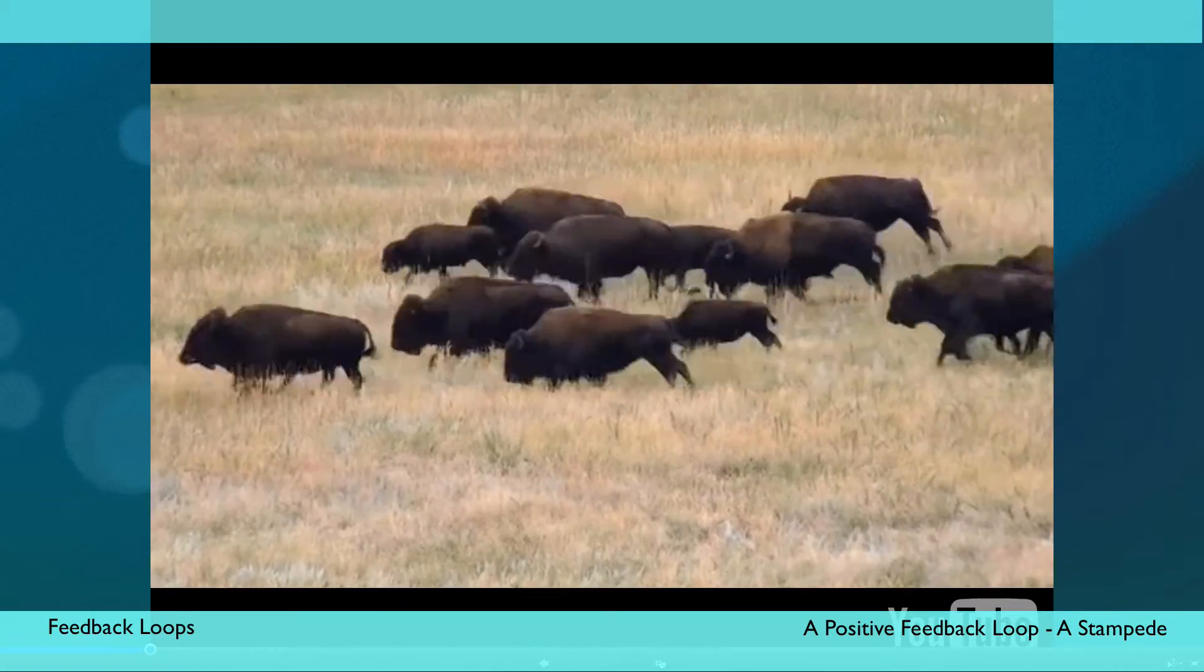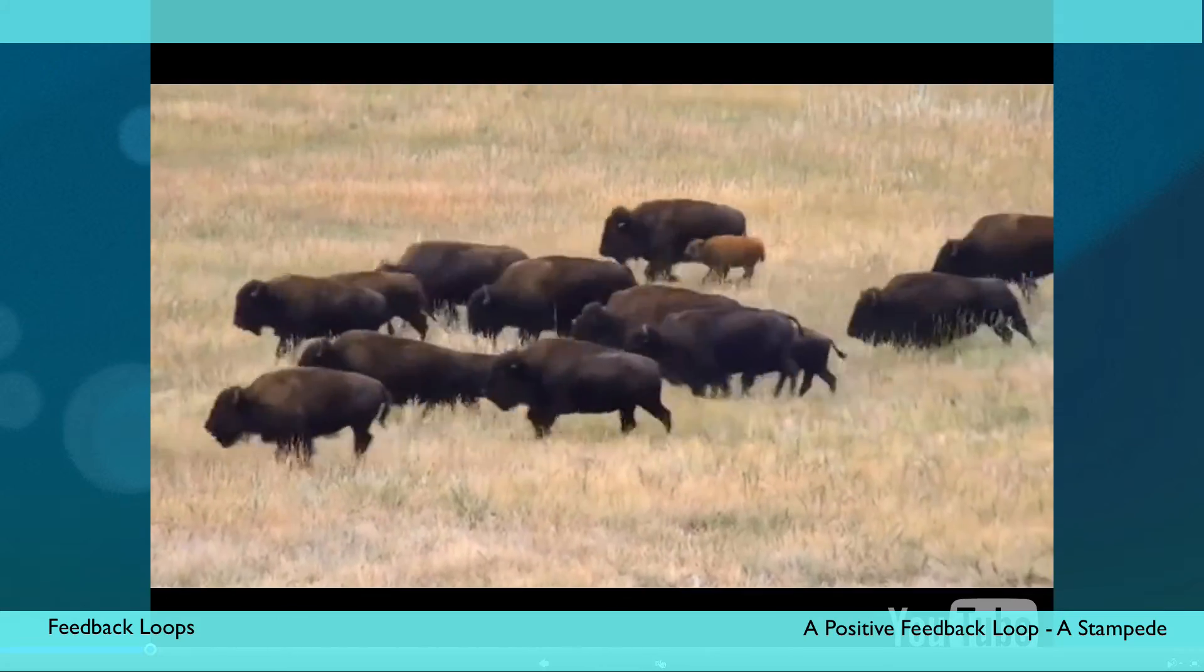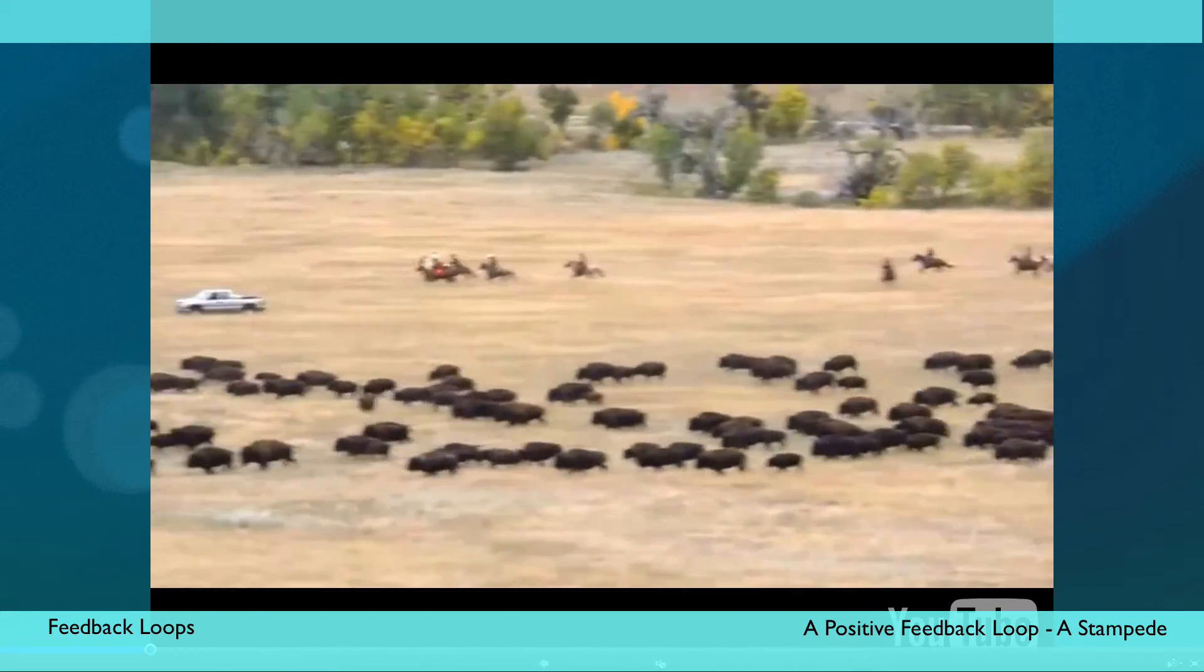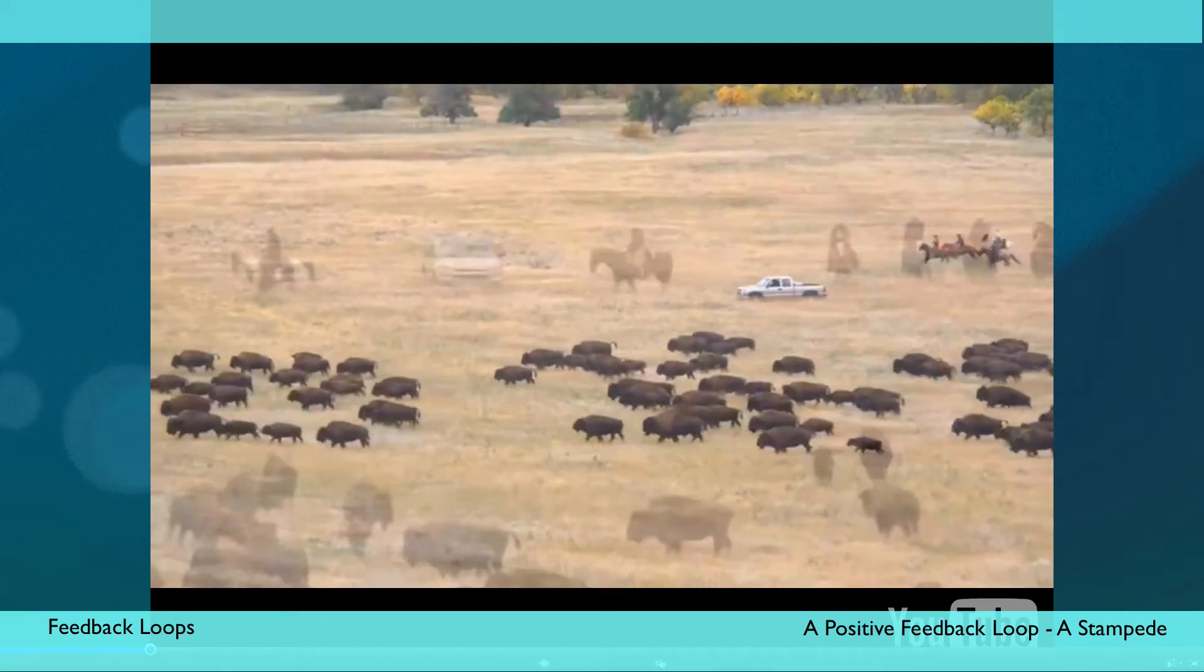This positive feedback loop is also called the reinforcing loop, when the parts of the system composing the loop reinforce each other, resulting in mutual growth, a stampede, or mutual decline, when the herd slows down and the panic subsides.